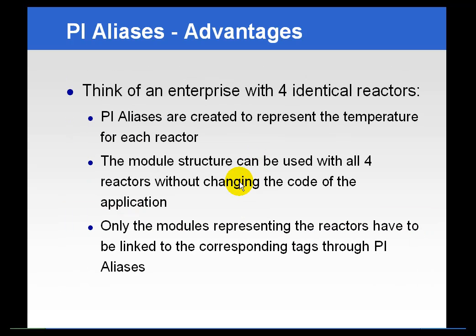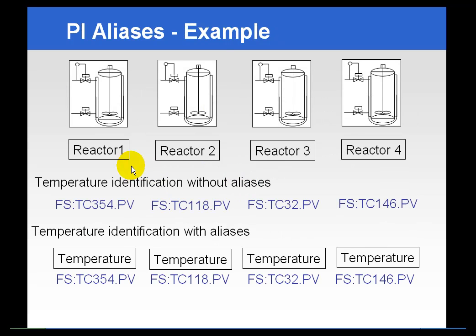Some of the advantages of aliasing are taking pieces of equipment that have identical types of sensors or sending units and tying all of them to a specific alias. For example, we have an example here of four different reactors — one, two, three, and four — and these reactors have certain tags that measure the temperatures within those reactors.